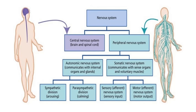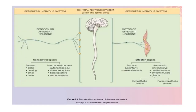The sympathetic system is activated during fight-or-flight situations. When any disturbance or stress occurs in the body, the sympathetic system activates. When the body is in a normal resting condition, the parasympathetic system activates. The somatic nervous system is further divided into the sensory or afferent nervous system and the motor or efferent nervous system.